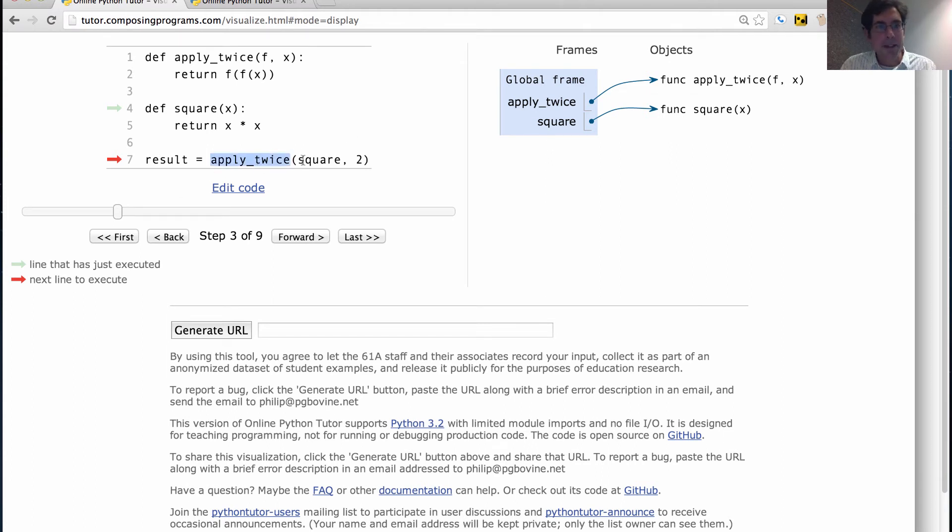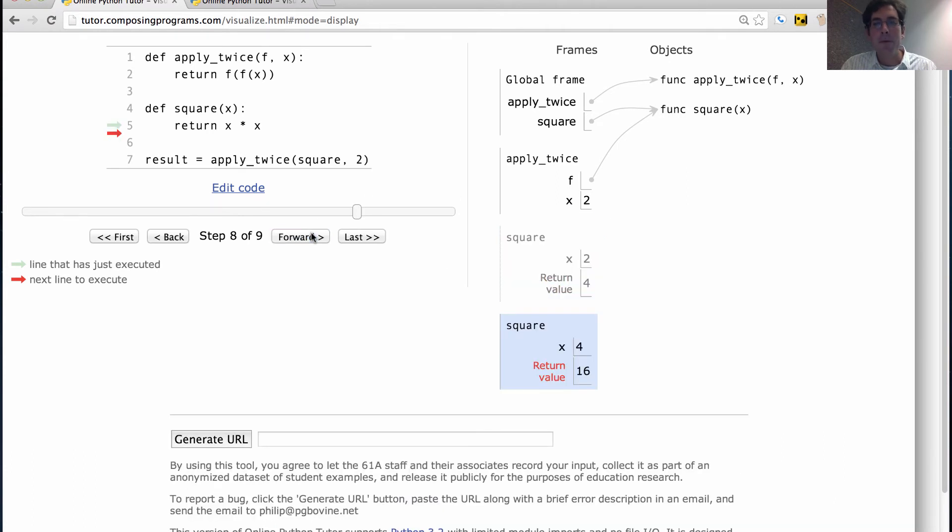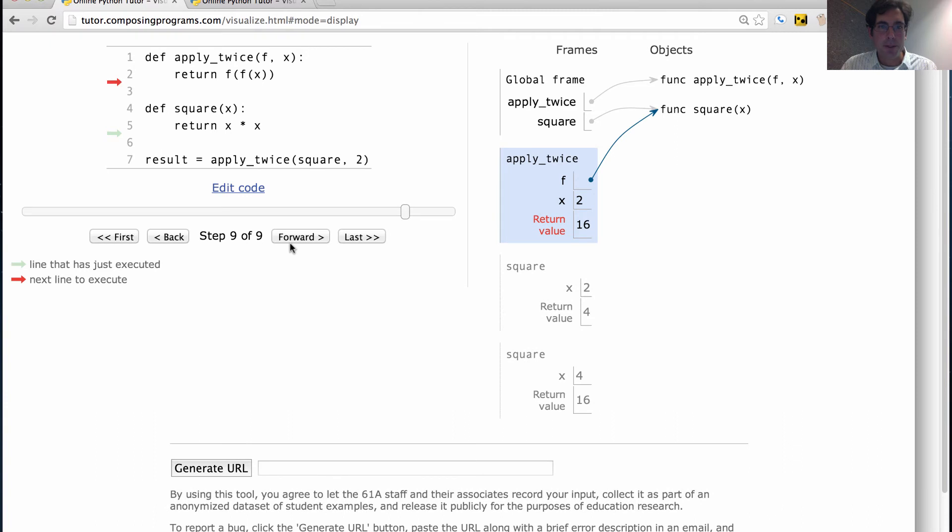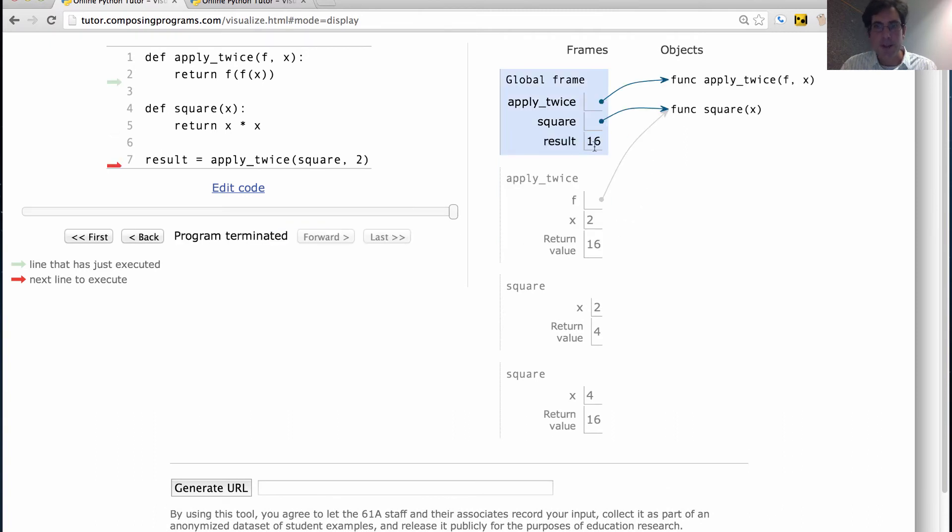So we get apply_twice. We apply it to the values square and 2. So there's a frame for apply_twice. f is bound to square. x is bound to 2. And we execute the body of that function, which means that we execute square. So we square 2 and we get back 4. And then we square 4 and we get back 16. 16 is returned from here. It's the value of this entire return expression, which means it will be returned here and then bound to the name result. Result is 16.